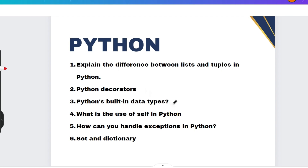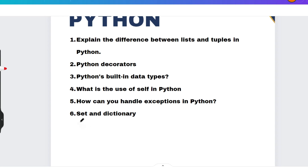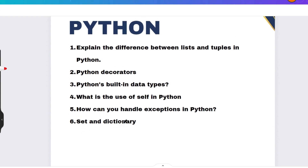If you have listed Python, you will still be asked from OOP concepts. Additional Python questions include: differences between lists and tuples, decorators, built-in data types, sizes of different data types, use of 'self' in Python, exception handling in Python, sets, and dictionaries. If you have solved two coding problems, the interviewer's expectations will be higher and you may be asked about lambda expressions and more advanced topics.